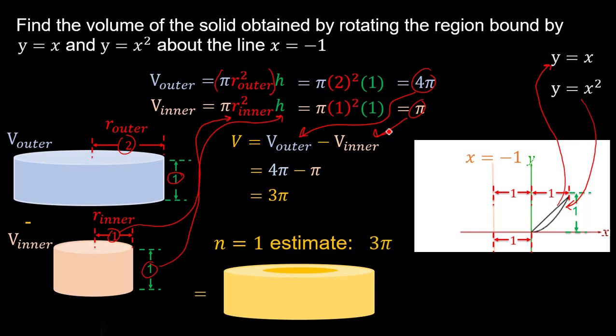This is going to be a bit of an overestimate because we used the maximum radius for the large volume and the innermost radius for the inner volume, giving us the maximum extent in the solid part. It's a big overestimate, but it gets us in the ballpark and gives us an idea of how we'll set up our integral to find the exact volume. Let's get a better estimate and go with n equals 5.